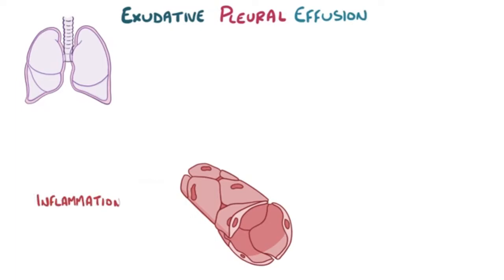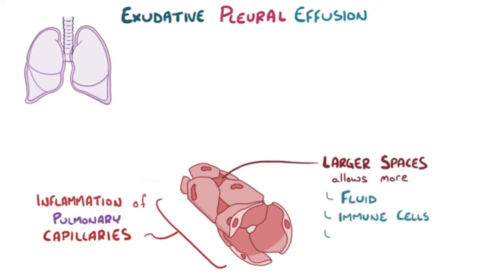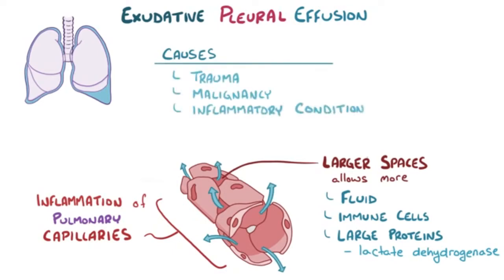Exudative pleural effusion is due to the inflammation of pulmonary capillaries, which causes them to be more leaky. Larger spaces between endothelial cells allow more fluids, immune cells, and large proteins such as lactate dehydrogenase — an enzyme found in most cells — to leak out from the capillaries. There are various causes, some of which are trauma, malignancy, inflammatory conditions like lupus, or an infection like pneumonia.